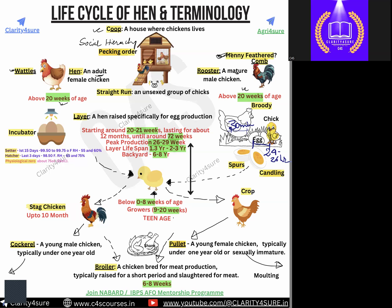So we have covered: coop, hen, wattle, rooster, and henny feather. Another term is straight run. Straight run means an unsexed group of chicks — when chicks are just a few days or weeks old, there is no sex differentiation. You cannot determine which is male and which is female. In a flock of chicks, 50% will be male and 50% female — that is called straight run.